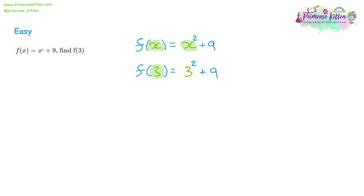Now we've done our substitution, we can start to work this out. 3 squared is 9, and we're adding 9 to it. So 9 plus 9 is 18, which is our final answer. These first sets of functions are just substitutions — it works exactly the same way as algebra substitution.